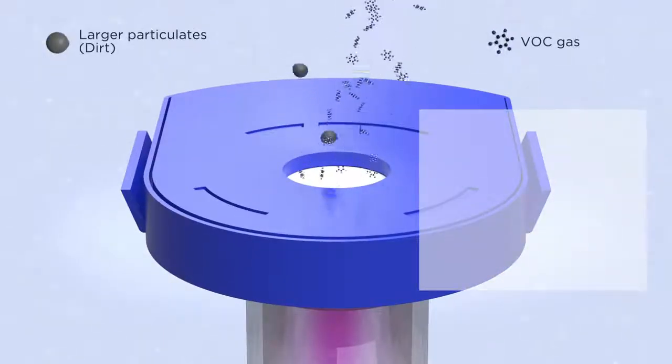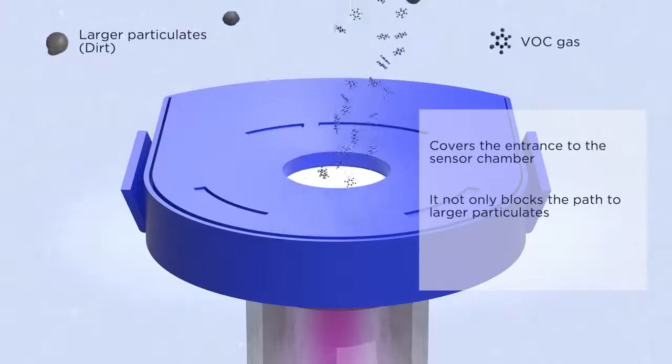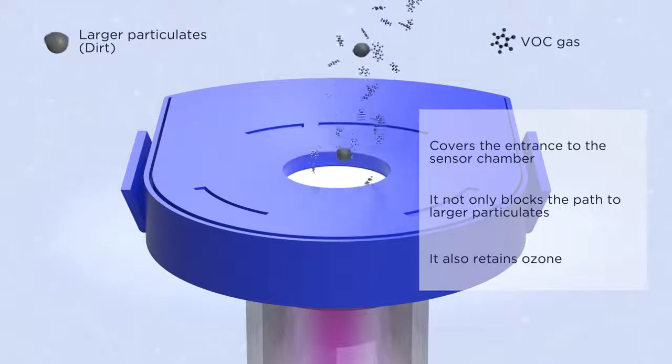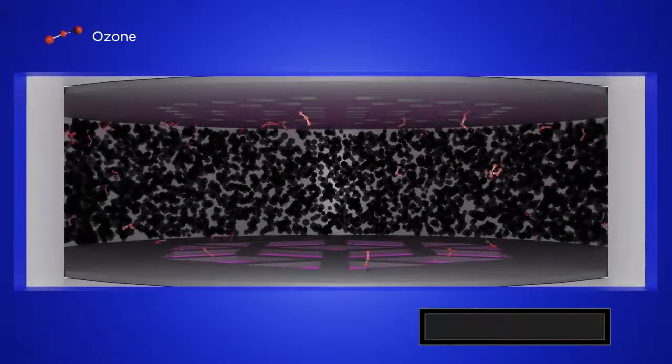Our anti-contamination system consists of a fine woven PTFE membrane that covers the entrance of the sensor chamber. It not only blocks the path to larger particulates, it also retains ozone that is naturally generated in the sensor chamber. Ozone aggressively cleans the chamber and lamp window, helping maintain optimal performance over extended periods.